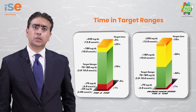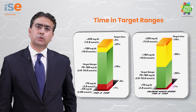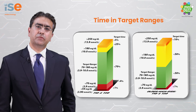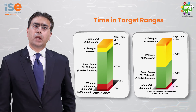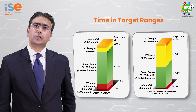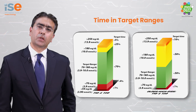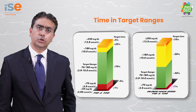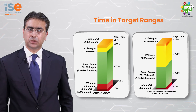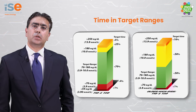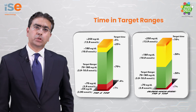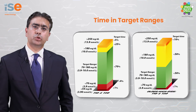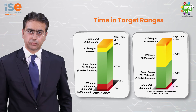For these patients, their target range should be more than 50% and their above target range should remain less than 50%. But most importantly, not more than 1% of their time should remain in the below target range.